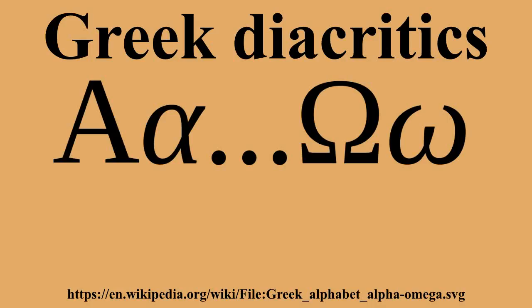The rough and smooth breathings were introduced in classical times in order to represent the presence or absence of an h-sound in Attic Greek, which had adopted a form of the alphabet in which the letter eta was no longer available for this purpose, as it was used to represent the long vowel.